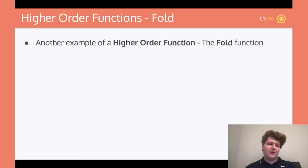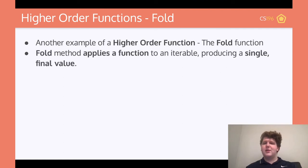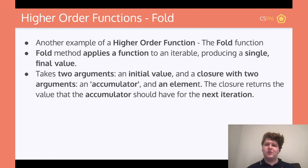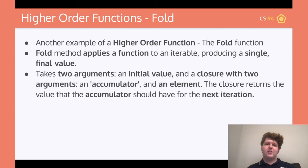Let's talk about the next higher order function, which is fold. The fold function is going to apply a function to an iterable and produce a single final value. The other two applied something to every single item and returned a list. This one is going to apply to every single item and then return only one item. It takes two arguments: the initial value and a closure with two arguments. The closure needs to take an accumulator and an element, and the closure is going to return the value that the accumulator should have for the next iteration.